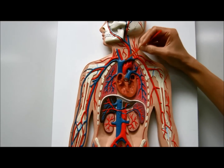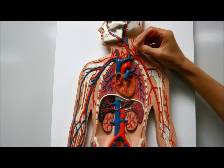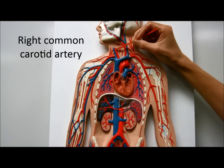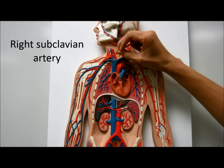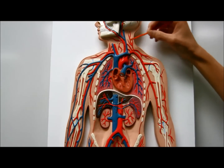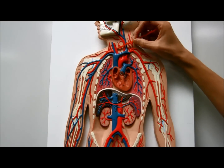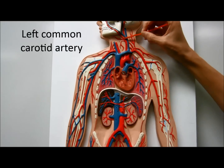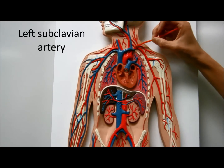The brachiocephalic trunk then splits or branches to become the right common carotid artery and the right subclavian artery. So it's not symmetrical. So again: this is the right subclavian artery, the right common carotid artery, the left common carotid artery, and the left subclavian artery.